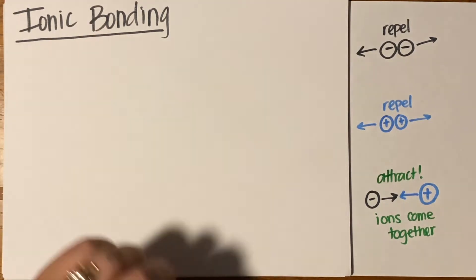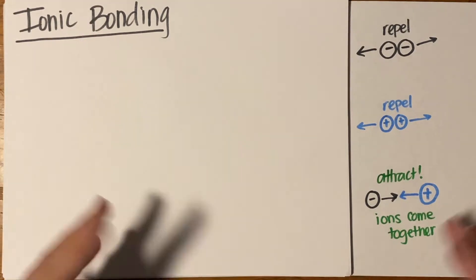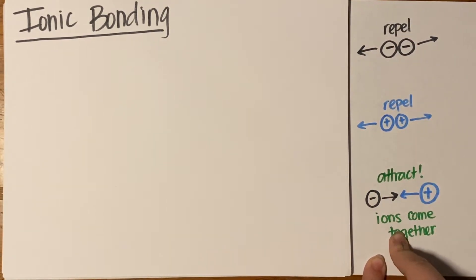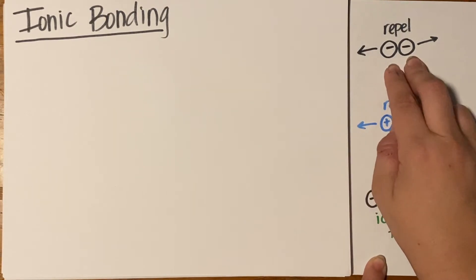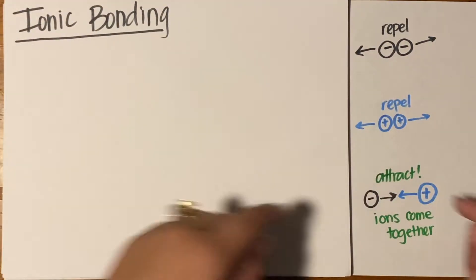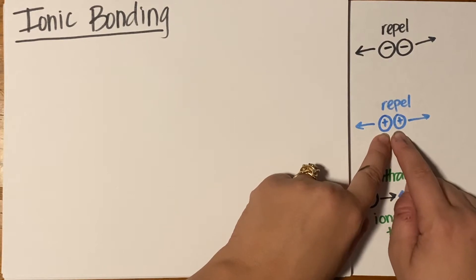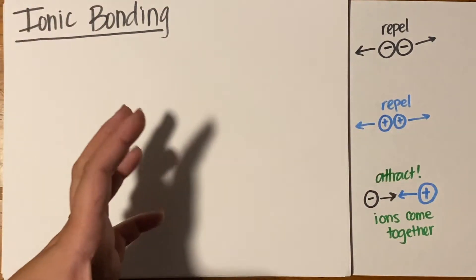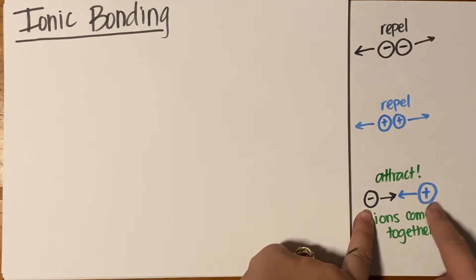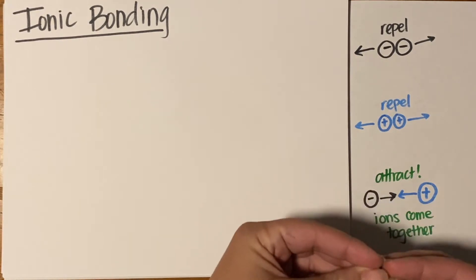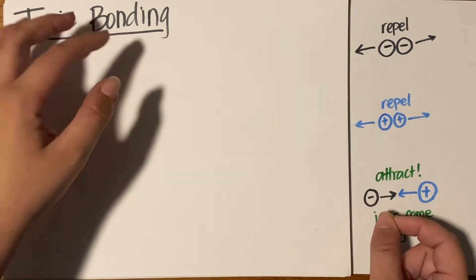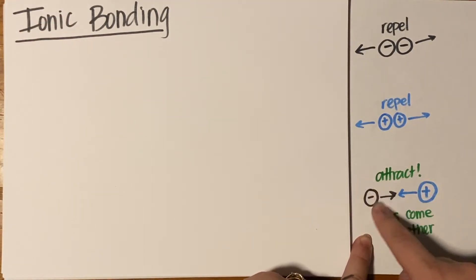In this video, we're going to look at the basics of ionic bonding — what it is and how to visualize it. I'm going to leave this little reminder on the side the whole time: two negatively charged ions next to each other would repel each other. Two positive ions next to each other would repel each other. But if you had a negative and a positive ion — a cation and an anion — they would be attracted to each other. That's exactly what ionic bonding is: the bond between a positively charged ion and a negatively charged ion.